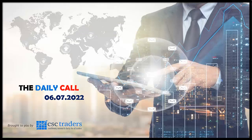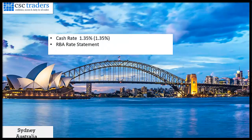Good morning traders and welcome to the daily call today, Wednesday the 6th of July. Looking at yesterday's markets, we had data released locally — we saw the RBA cash rate increase interest rates by 50 basis points. That is the second time in a row that they've done that by 50 basis points.